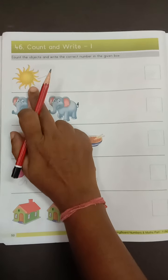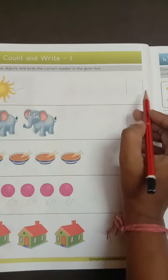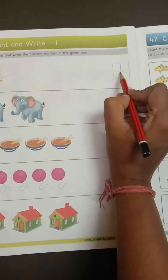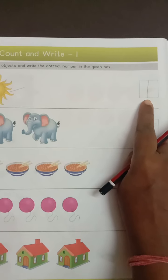So write number one in the box. What do you have to do? Write number one in the box.